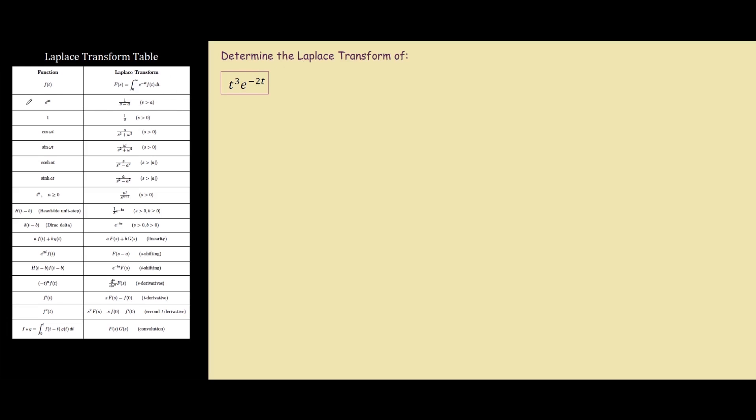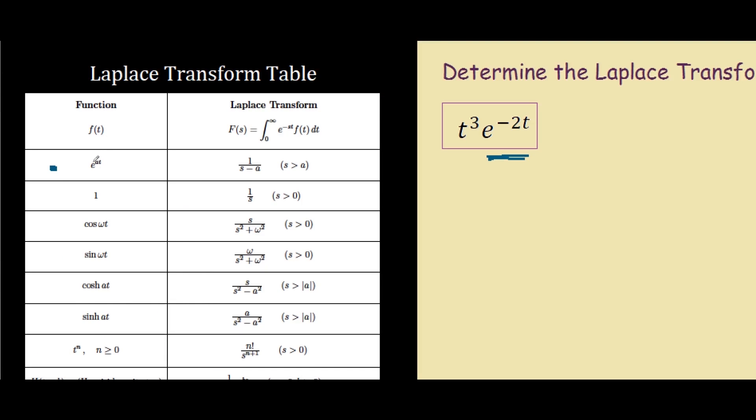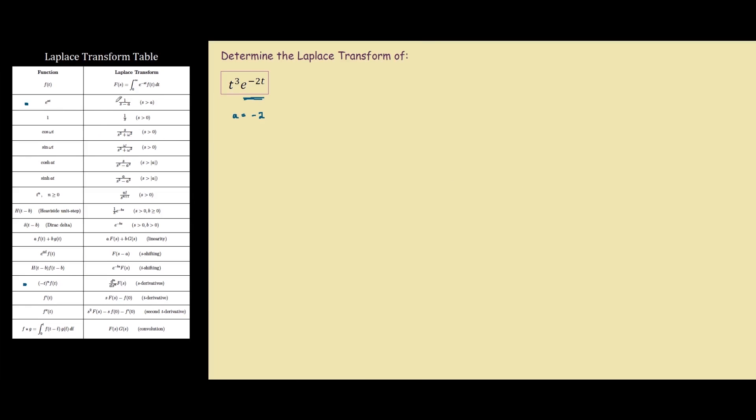From our table we'll be using these entries to solve this problem. If we focus on e to the power of negative 2t, from our table we can see that our a is negative 2. That will give us the Laplace transform of 1 over s minus a, which is negative 2. So this would be 1 over s plus 2, or another way of writing it is s plus 2 to the negative 1.